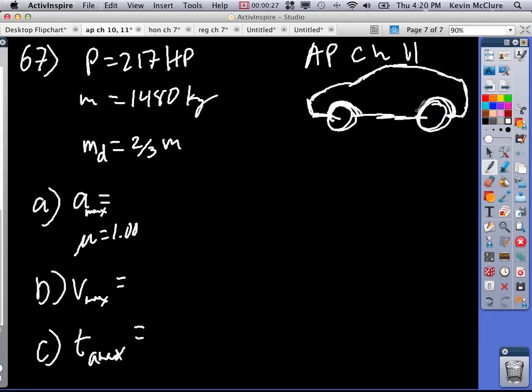Something like that. So this has a mass and two-thirds of the mass on the drive wheels, and that means here, that's FG, that's FN.